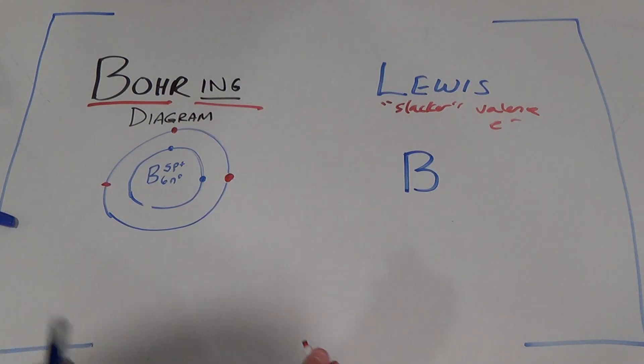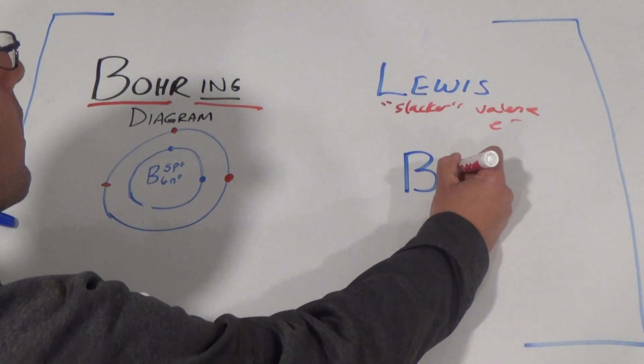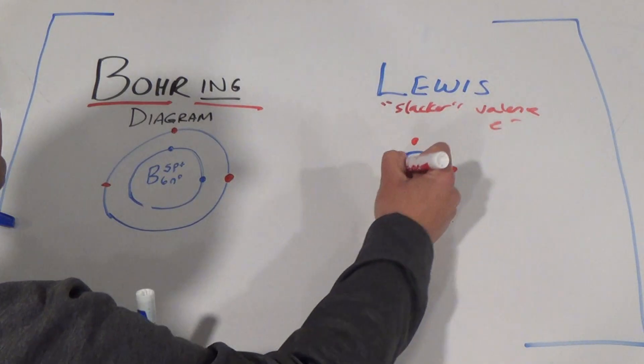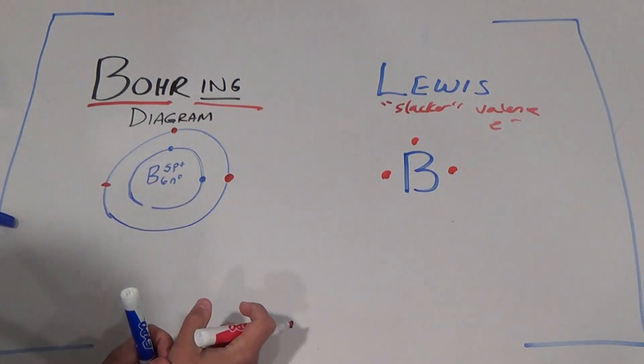So how many total electrons does boron have? Five. Two in the first level, three in the second level, the outer level. So therefore, boron has three valence electrons. Lewis is like, let's just show the valence electrons. First one goes here, one, two, three. Just like that. That's it. Done.